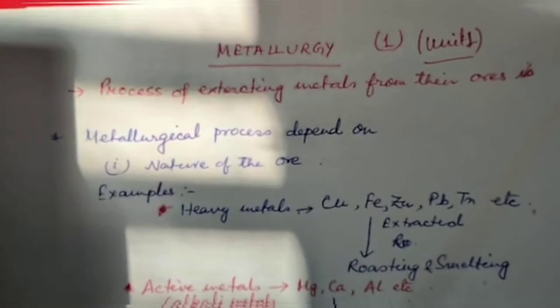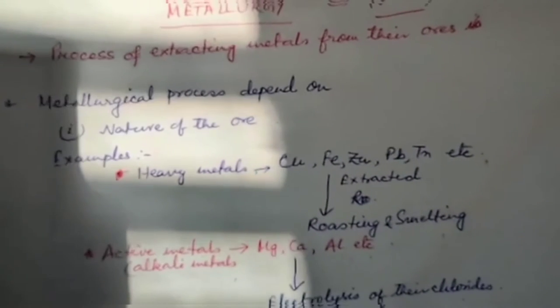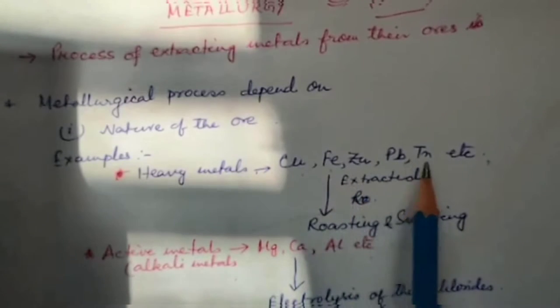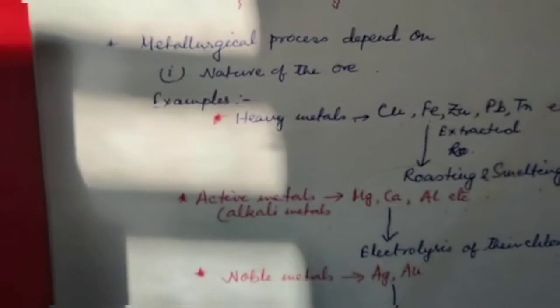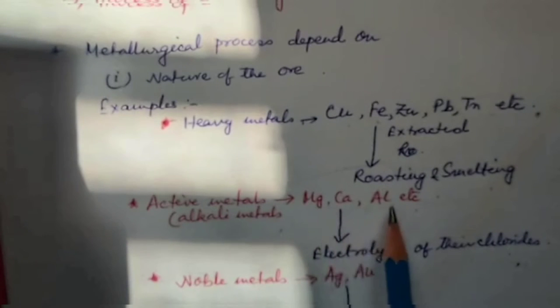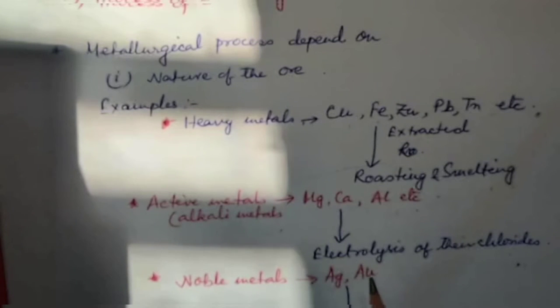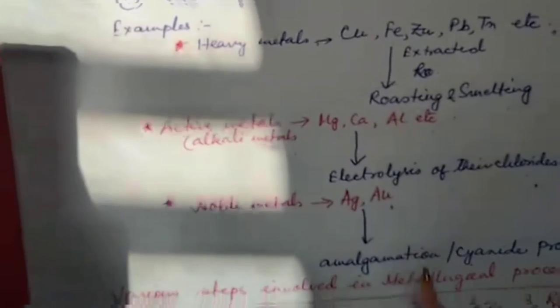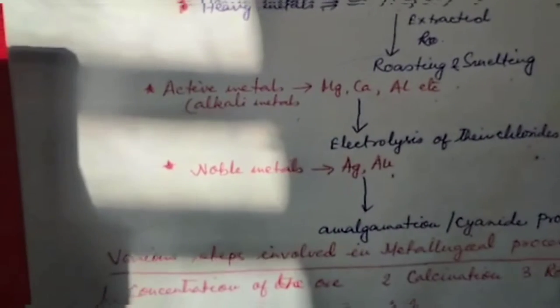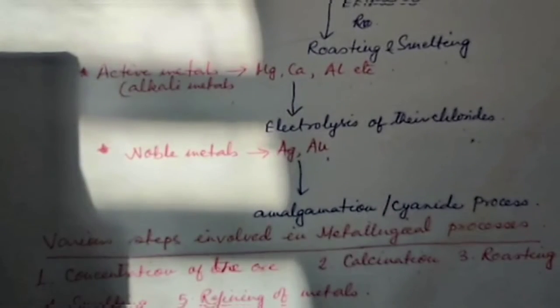For example, heavy metals such as copper, iron, zinc, lead, tin, etc., are extracted from their ores by conventional roasting and smelting. Active metals like alkali metals, magnesium, calcium, etc., can be extracted by electrolysis of their chlorides and hydroxides or oxides in fused state. Noble metals such as silver and gold are obtained by amalgamation or cyanide process.